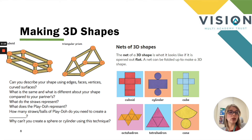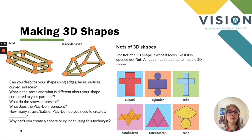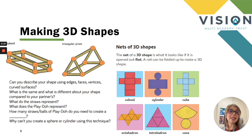Another way of looking at it is the net of a 3D shape. A net is what a 3D shape looks like when it's opened up flat. A net can be reversed and folded up to make a 3D shape. Here are six examples of some common nets for 3D shapes, and children can begin to identify the 3D shape based on its net.